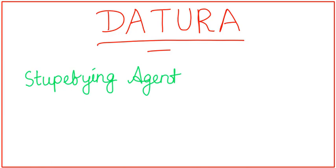Dhatura is a stupefying agent as it causes stupor. Other stupefying agents are cannabis indica and chloroform.